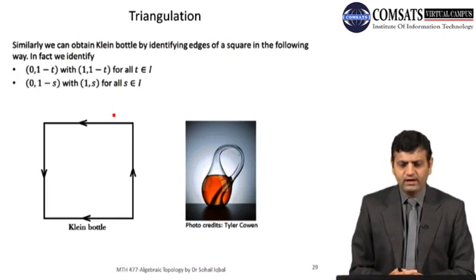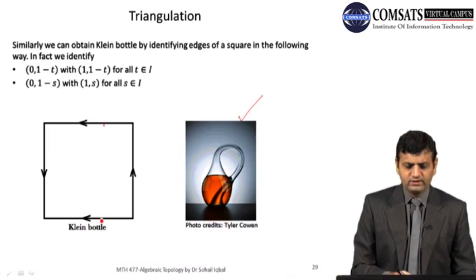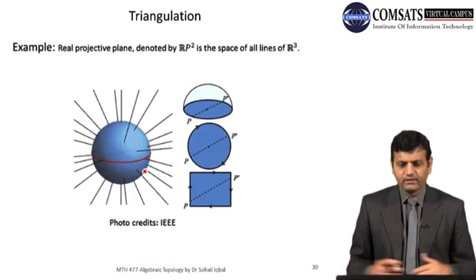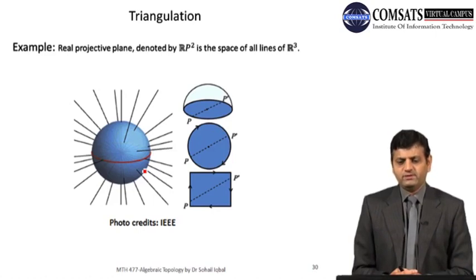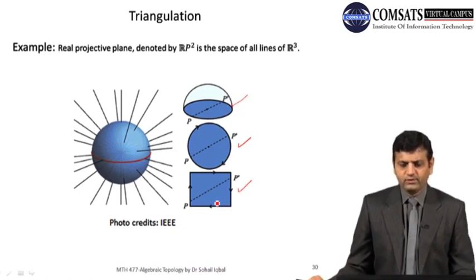Similarly, we can obtain a Klein bottle by identifying edges of a square in the appropriate way — identifying one pair of edges normally and the other pair in opposite directions (with a twist). This Klein bottle can also be triangulated. We can also triangulate the real projective plane ℝP^2.